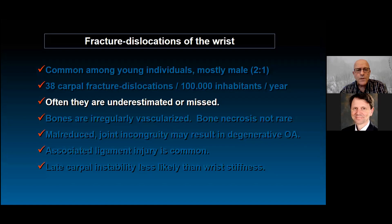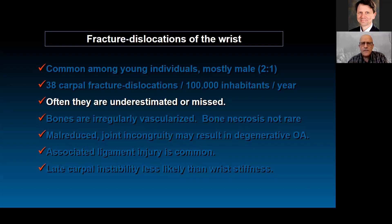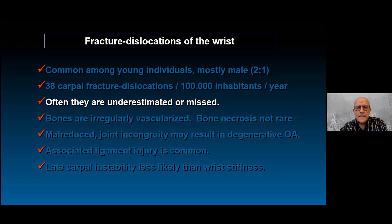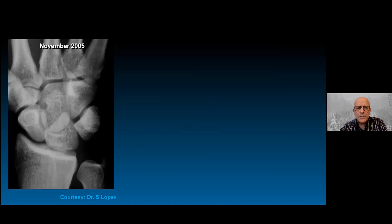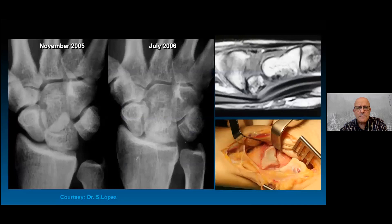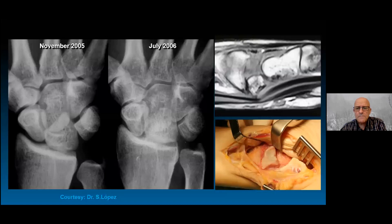Most often these injuries are underestimated or missed. It's amazing they can be missed given how destroyed the articulation is inside. For example, here is a perilunate dislocation where the lunate has a triangular shape, indicating dislocation. Seven months later it was still dislocated, with the lunate impinging the flexor tendon and median nerve in the carpal tunnel — found by Dr. Silvia Lopez, a former fellow.